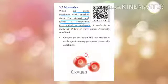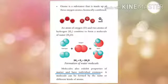When an atom combines with another atom and forms a compound, it is called a molecule. A molecule is made up of two or more atoms chemically combined. Oxygen gas in the air that we breathe is made up of two oxygen atoms chemically combined, giving us O₂. Ozone is a substance made up of three oxygen atoms chemically combined, giving us O₃.